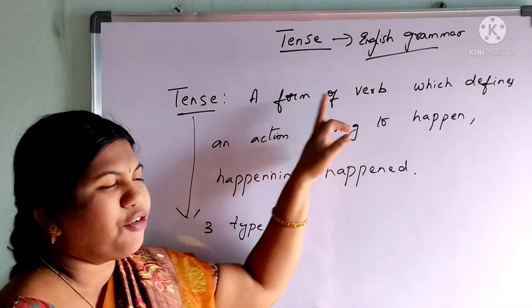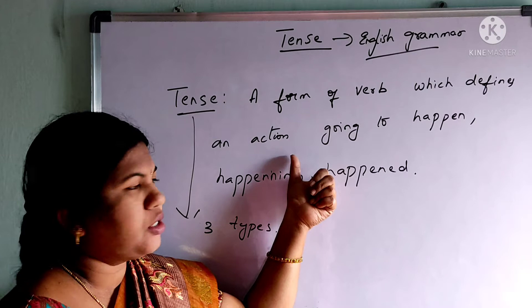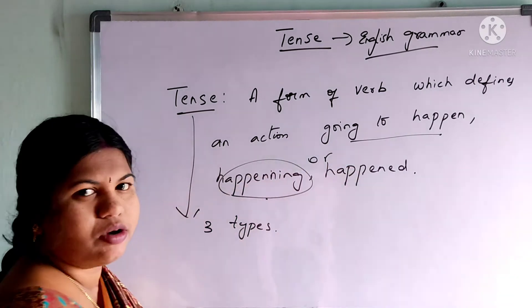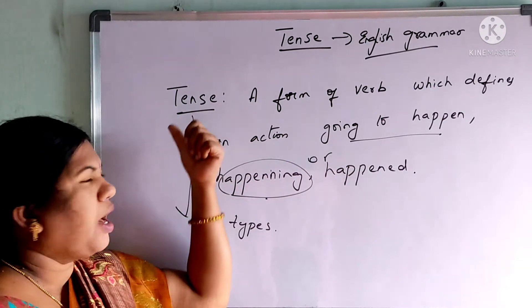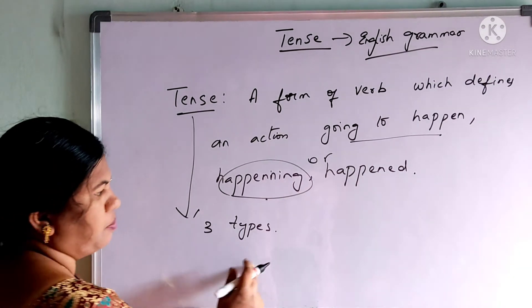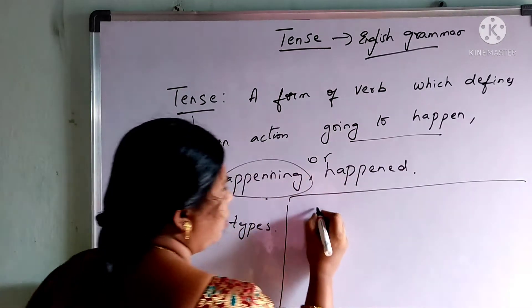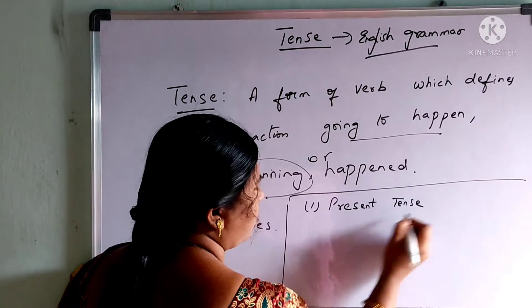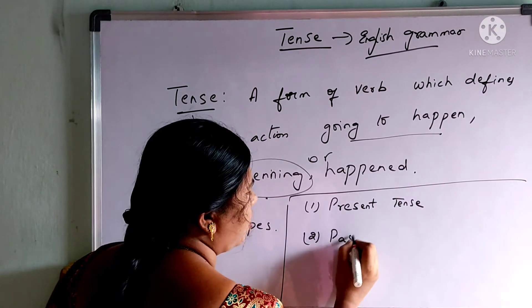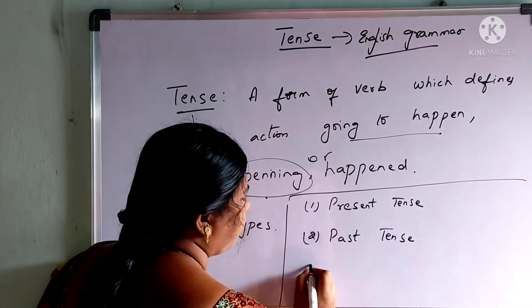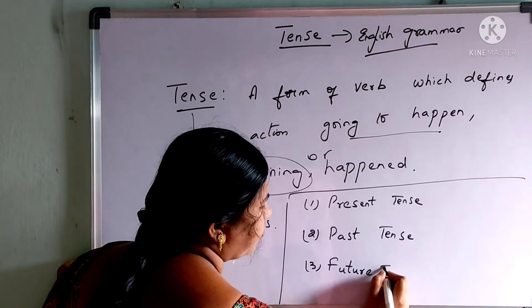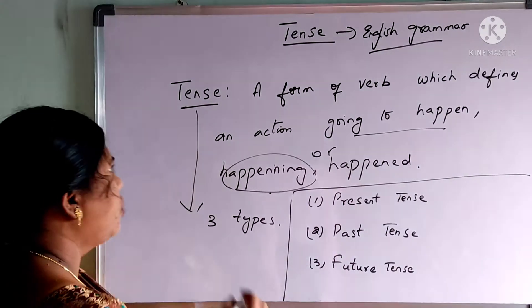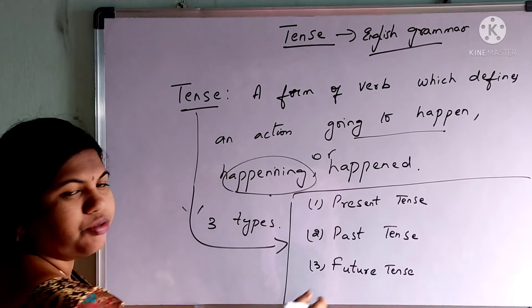What are they? Let us see. The first one is present tense, the next one is past tense, and the third one is future tense. Tense is divided into these three types.